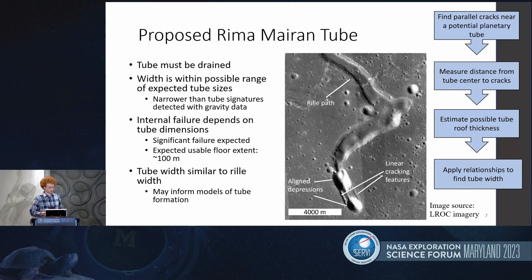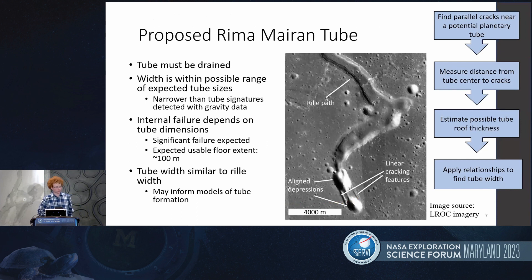The significance of this is, first, seeing the cracks implies the tube is drained, which is important because sometimes a lava tube isn't drained if the lava inside just solidifies in place. Also, this width is within the possible range of expected tube sizes on the Moon, which is a promising sign. The tube width I estimated can be used to inform models of internal stability, and knowing it is similar to the width of the rill itself could inform models of how rills and tubes form and how one can transition into the other.